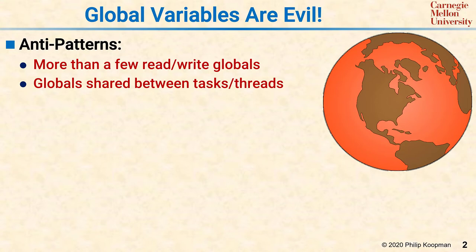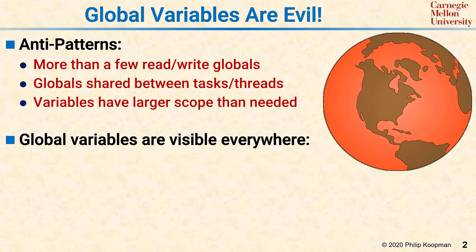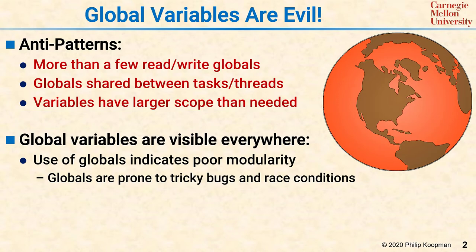Because global variables are visible everywhere in your program, they are an open invitation to obscure dependencies, race conditions, and bugs. In general, the use of globals indicates poor modularity, because globals are creating dependencies between modules that might be in completely different parts of your software system. Globals are prone to tricky bugs, and shared globals are the source of many race conditions that can lead to failures that will slip past testing and make it into the field.